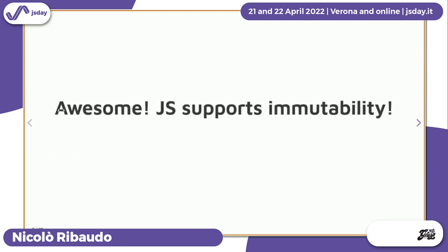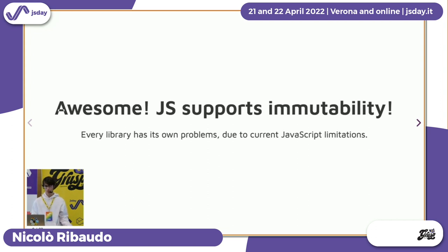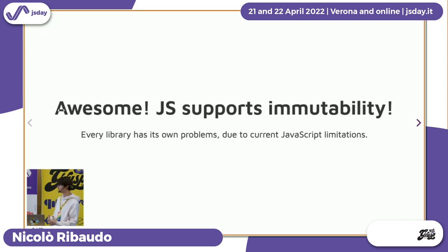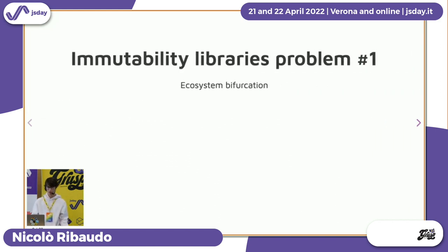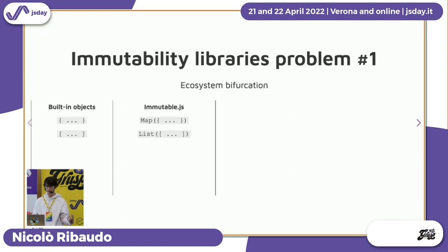So we have two really good libraries that give us immutability in JavaScript. So why do we need a proposal? Every library has its own problems — and it's not because those libraries are badly designed, it's just because they have to work with the language we have. They have to somehow fit within the existing JavaScript semantics. The main problem is that they cause an ecosystem bifurcation, especially with Immutable.js, meaning you now have two different ways of doing things.